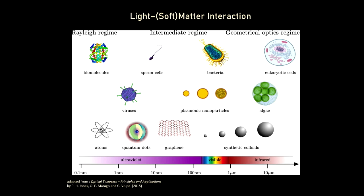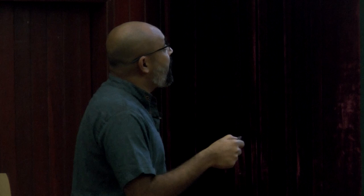To understand how light interacts with soft matter, we broadly classify interactions depending on particle scale compared to the wavelength of light. In the Rayleigh regime, particles are very small compared to the wavelength, and you can use the dipole approximation. In the intermediate regime — for viruses, small cells, or plasmonic nanoparticles — you must use complete electromagnetic theory. And there's also the geometrical optics regime where the system size is reasonably larger than the wavelength.